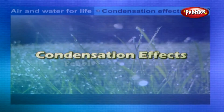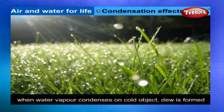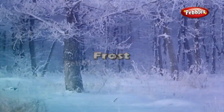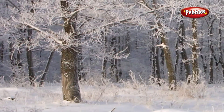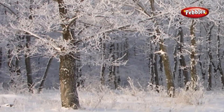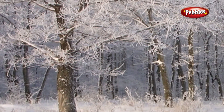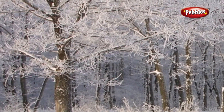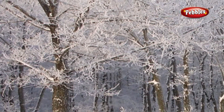Condensation effects: Dew — when water vapor condenses on cold objects, dew is formed. Frost — when objects are extremely cold, frost may be formed by water vapor. When nights are very cold, the ground temperature falls below 0°C and the water on the ground freezes — this is called frost.